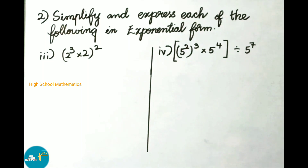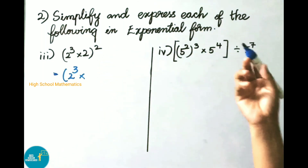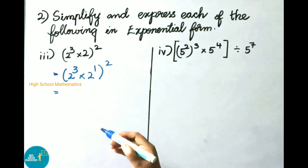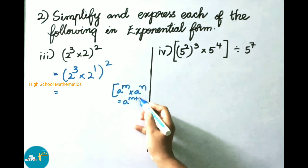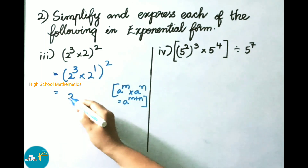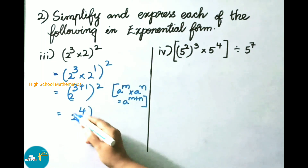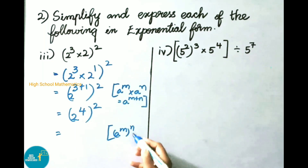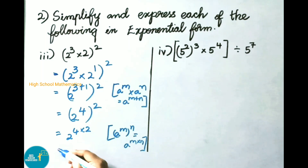Third sum: 2 power 3 into 2 whole power 2. Since 2 has no exponent shown, we take it as 2 power 1. So we have 2 power 3 into 2 power 1 whole power 2. Using a power m into a power n, we get 2 power 3 plus 1 equals 2 power 4, giving 2 power 4 whole power 2. Using a power m whole power n equals a power m into n, we get 2 power 4 into 2 equals 2 power 8. The answer is 2 power 8.